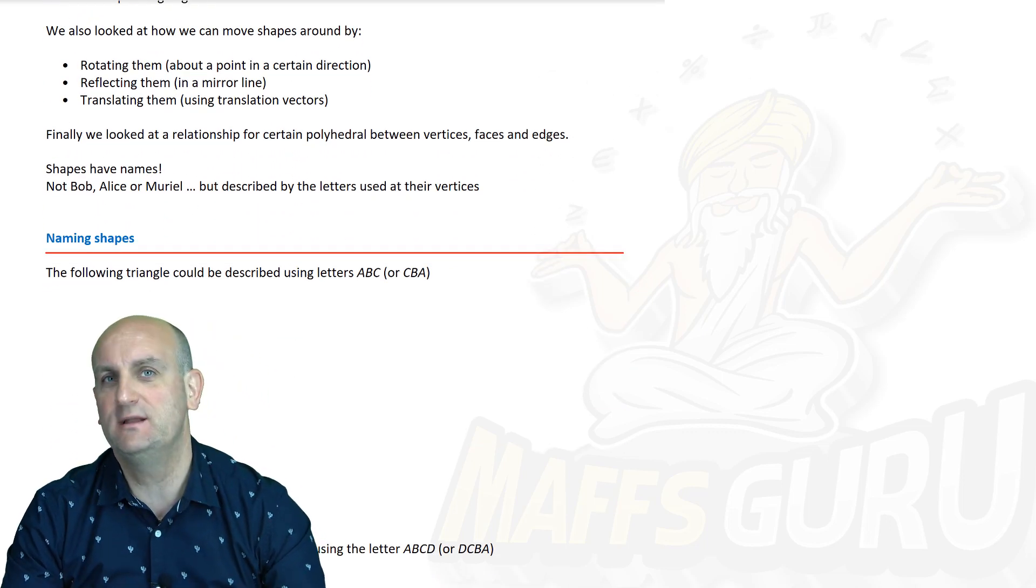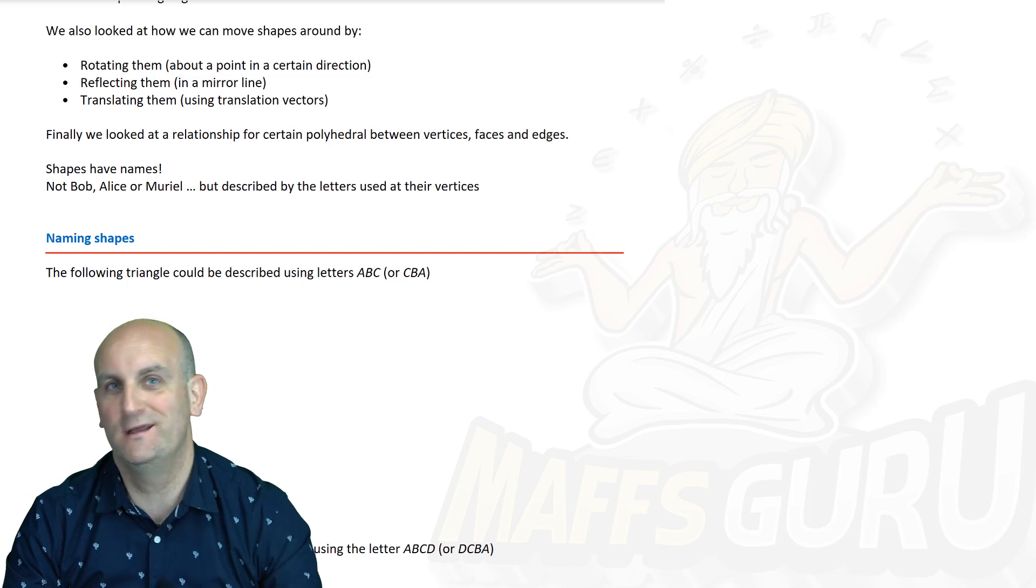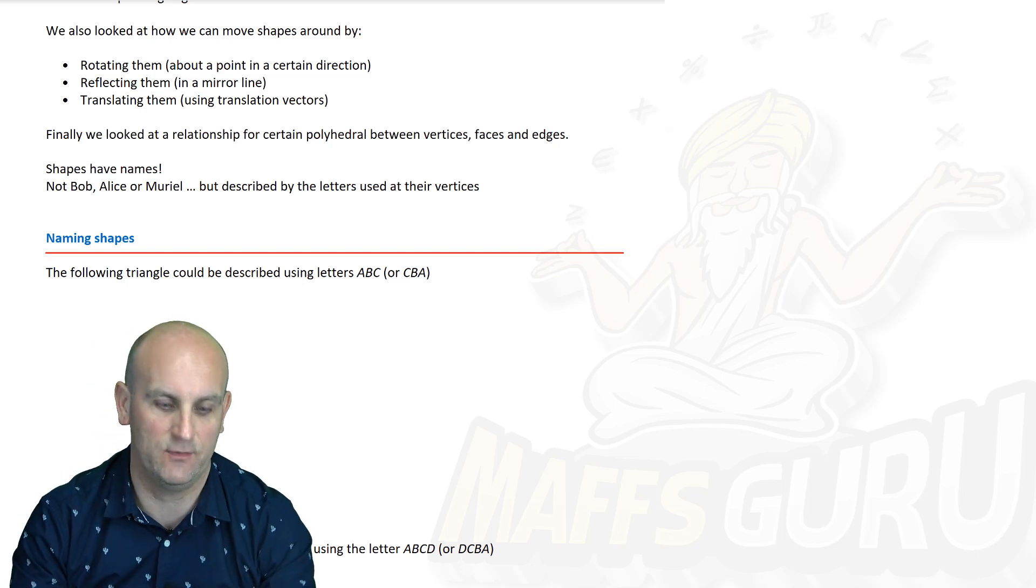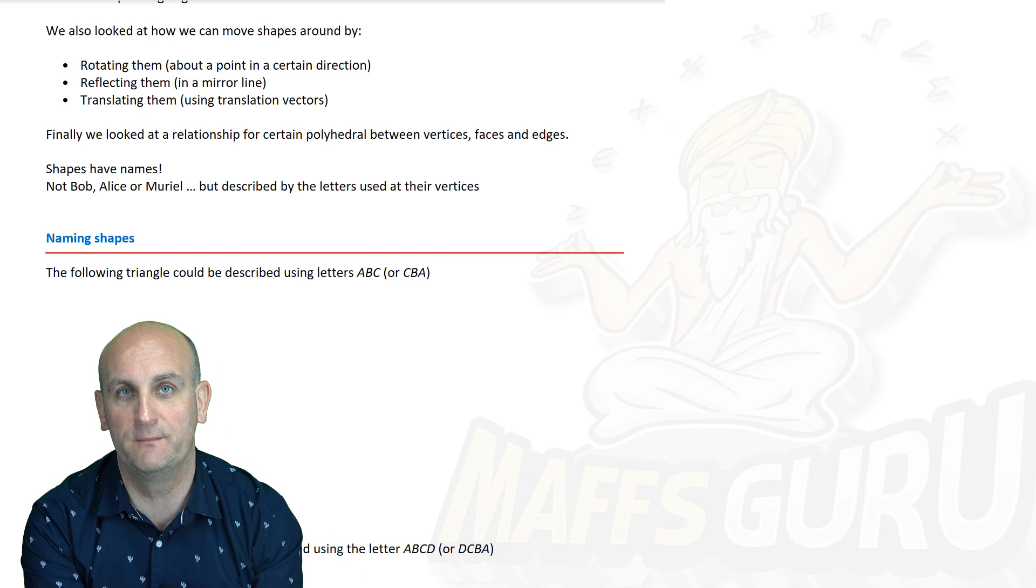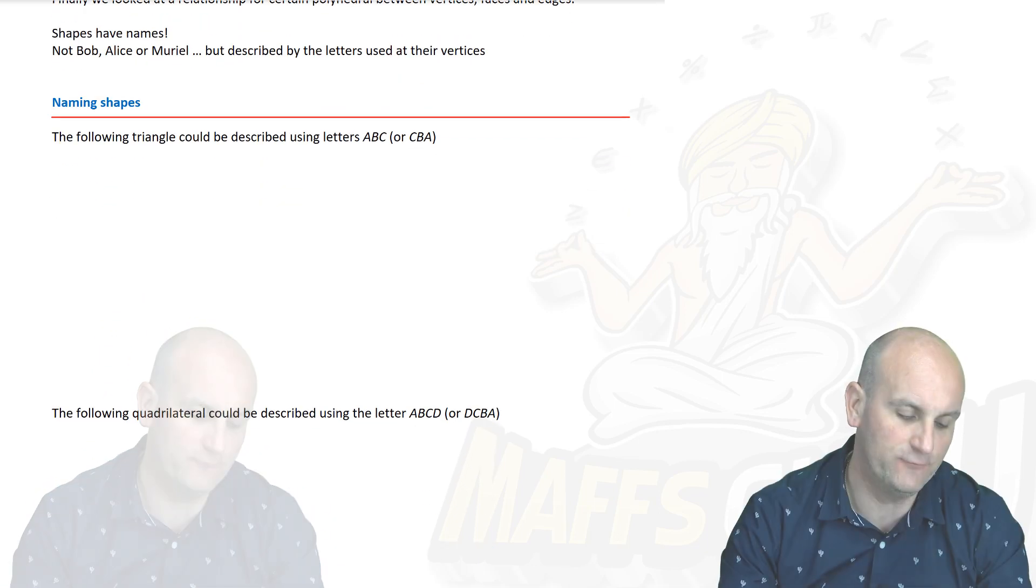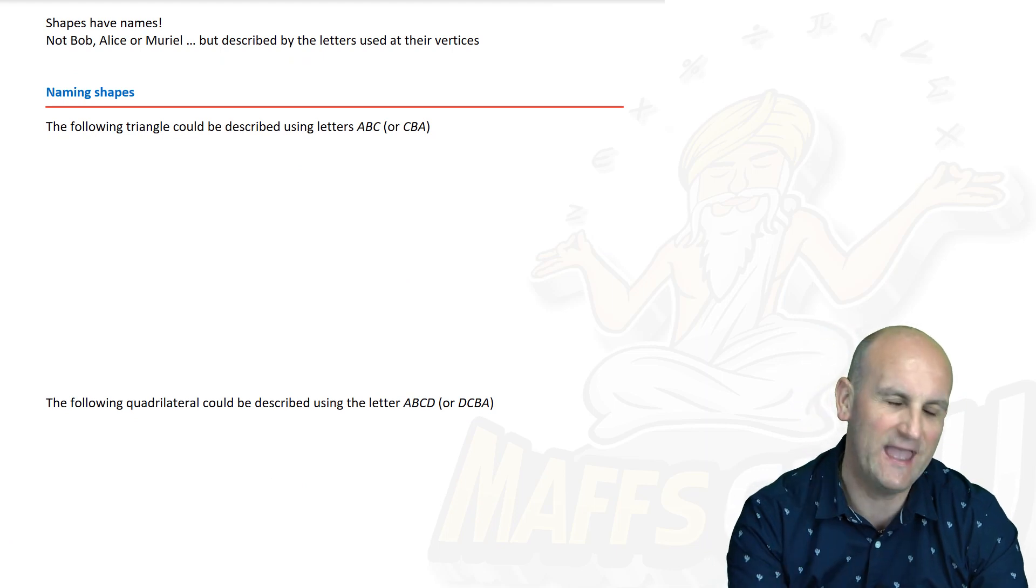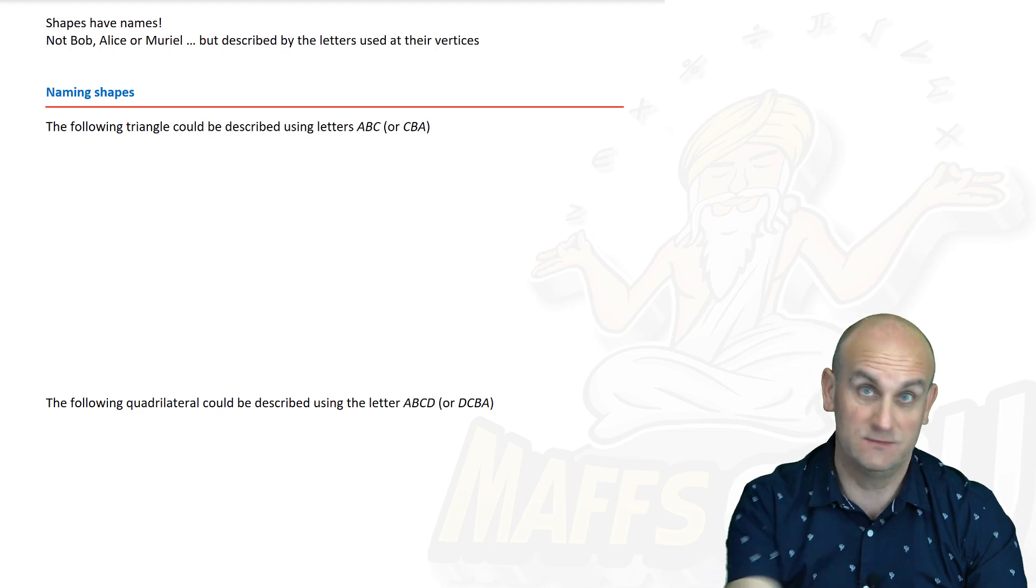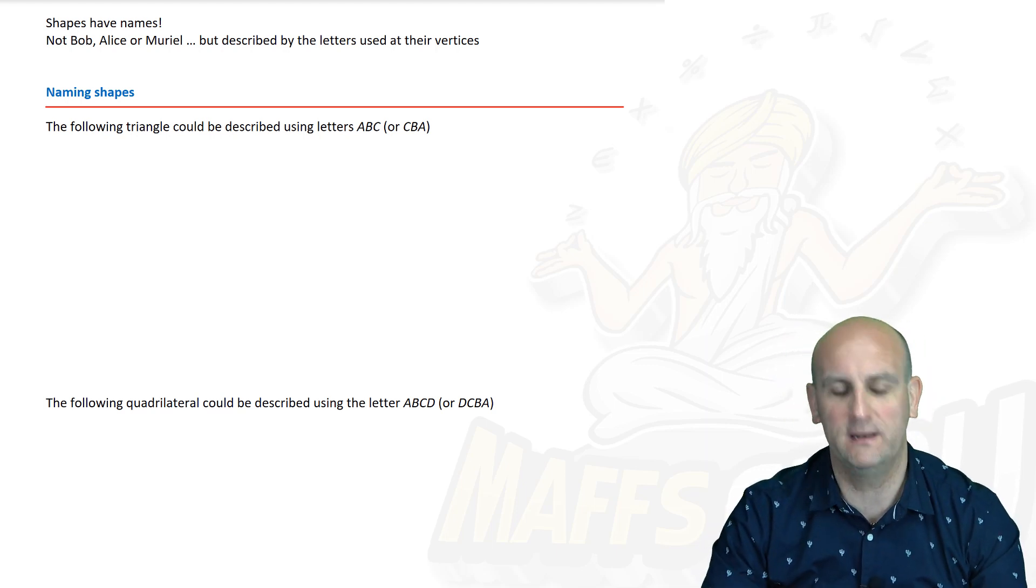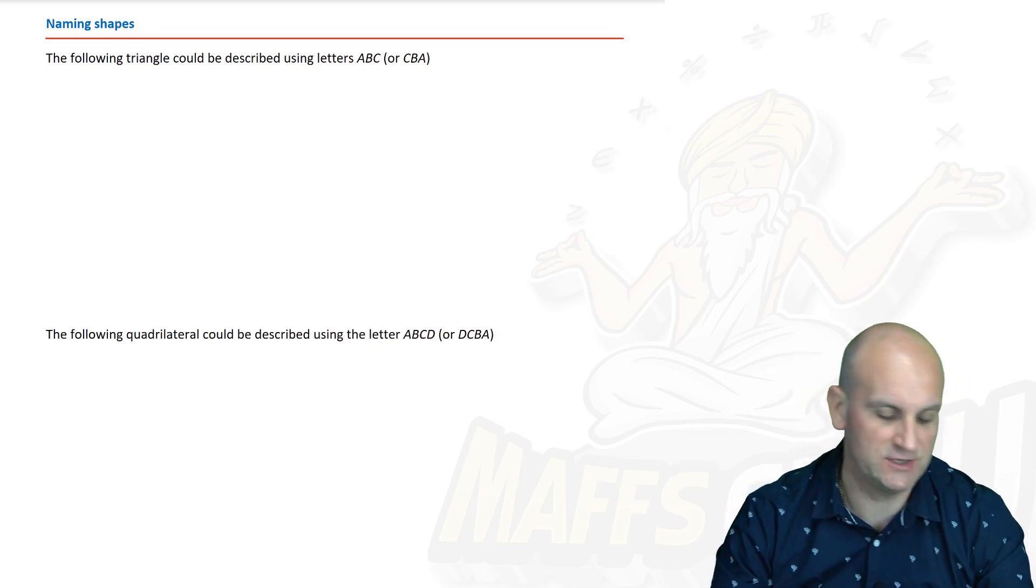We've also looked at things about how we can take particular figures and rotate them, reflect them, translate them and we've looked at the idea of Euler's rule where we have edges, faces and vertices and how they are all related for polyhedra. Now that's all the stuff that's gone before but you're here for congruence. Well before we go anywhere, do you know we can actually name shapes? Now as I say, we do not name them Bob, Alice or Muriel.